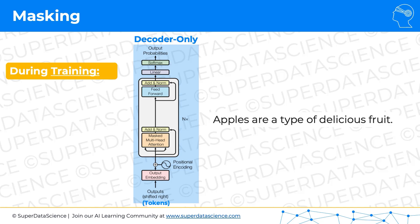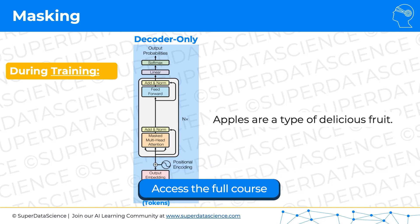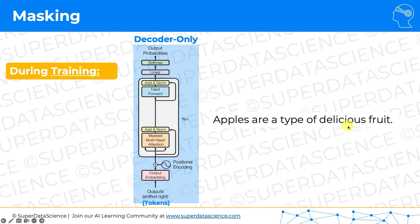Here we've got a sentence that we want to train the transformer on. In inference, as you probably noticed in the past couple of tutorials, we were giving the transformer the first six words — 'apples are a type of delicious' — and we wanted it to predict the seventh word, 'fruit.'